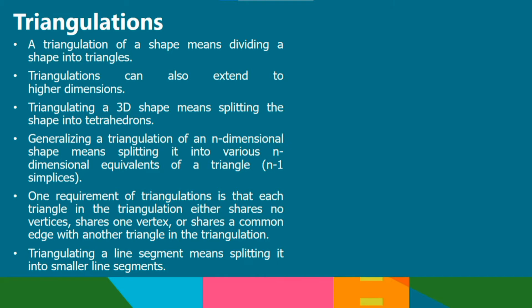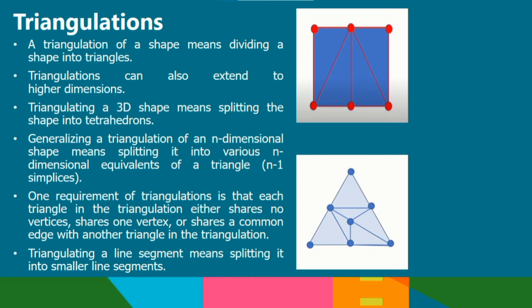Next is triangulations. A triangulation of a shape means dividing the shape into triangles. Triangulations can be done on squares, triangles and can even be extended to higher dimensions. Triangulating a 3D shape means splitting the shape into tetrahedrons.